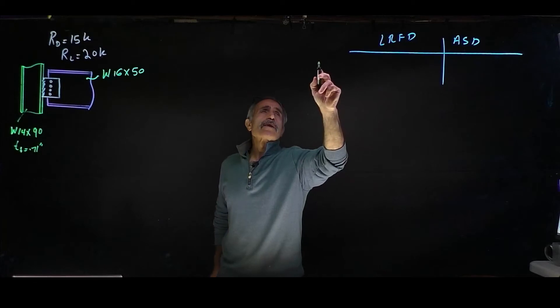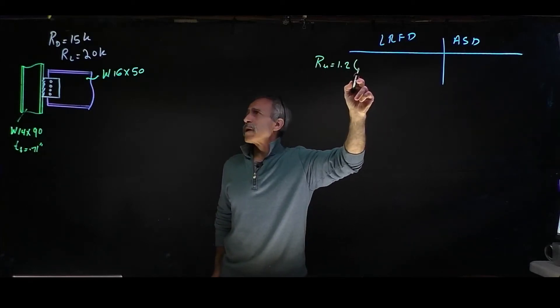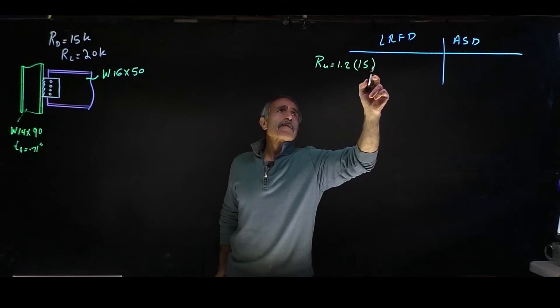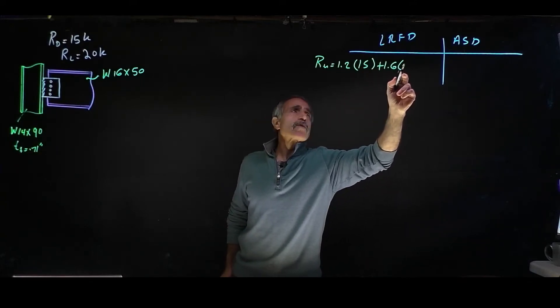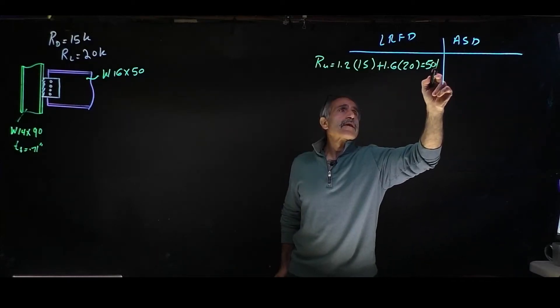Our Ru is going to be 1.2 times 15 kips plus 1.6 times 20, and that gives us 50 kips.